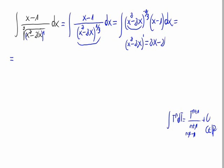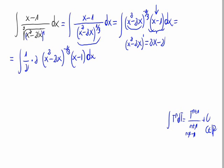What a pity — we don't have 2x minus 2 right here. Let's try to make some changes to find it. Multiplying x minus 1 by 2 we would obtain 2x minus 2. So we multiply inside by 2, and also multiply the whole integral by 1 half, so there are no changes at all. Let's write the rest of the integral and take the 2 inside the parenthesis.